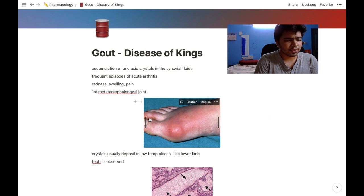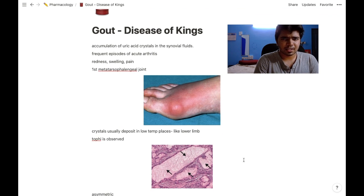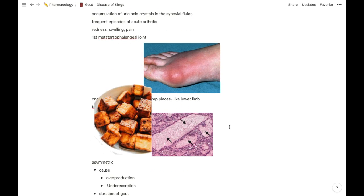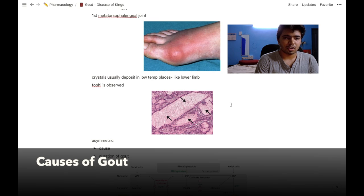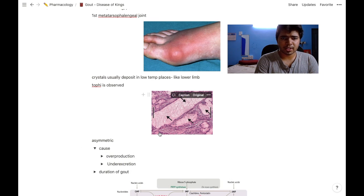The most common site for this to occur is in the first metatarsophalangeal joint. It isn't necessarily symmetrical. In gout, tophi are observed.